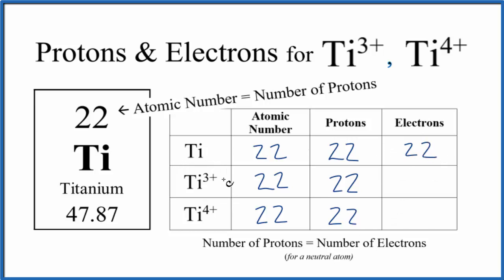For titanium 3+, this 3+ means we've lost three negative charges that made us positive. Those negative charges are the electrons. So we've lost three electrons. 22 minus 3, that's 19. So for Ti3+, we have 19 electrons.